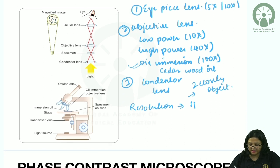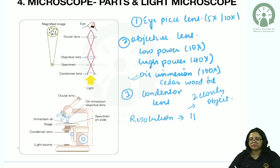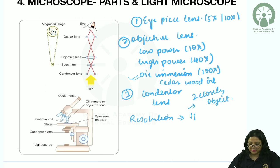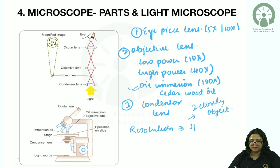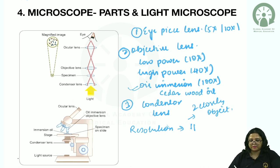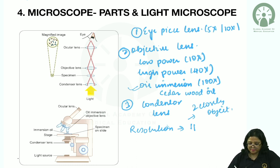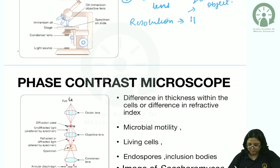Light microscopy is used for staining — for example, gram staining to differentiate gram-positive from gram-negative bacteria — and for performing the hanging drop experiment to see motility.